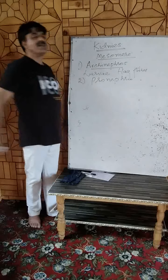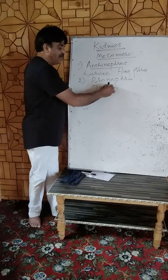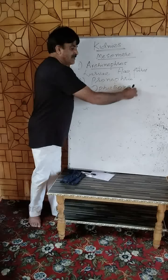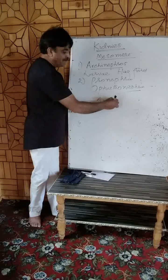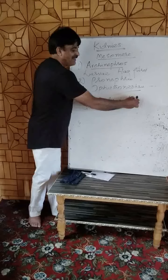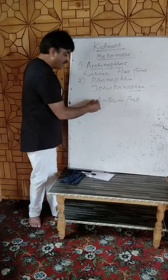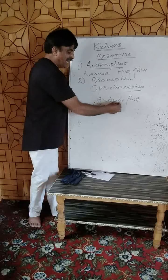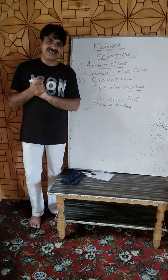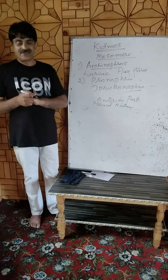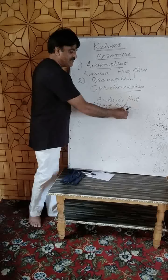The second type of kidneys are called pronephric kidneys, also called pronephros or opisthonephric kidneys. These actually develop from the anterior-most part of the mesomere. They are often referred to as head kidneys. These contain structures called nephrostomes. Such kidneys are present in the adults of hagfishes and some bony fishes.